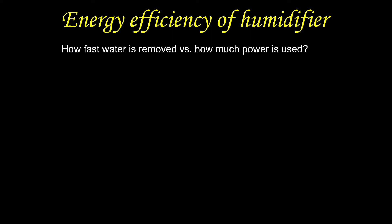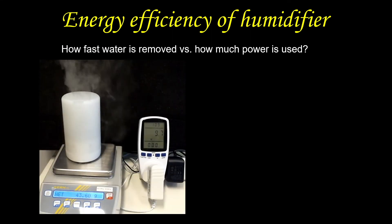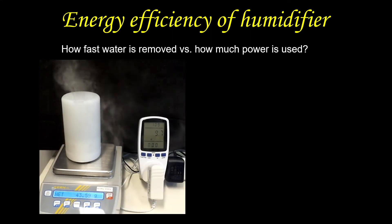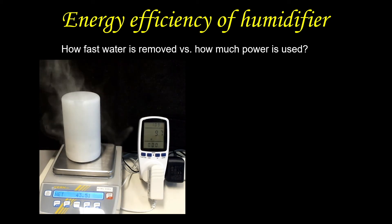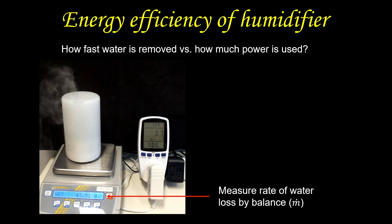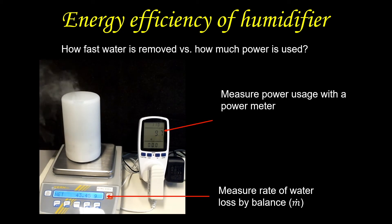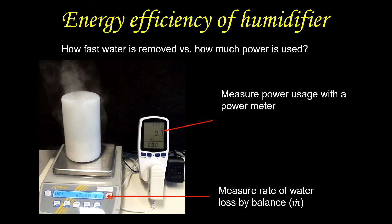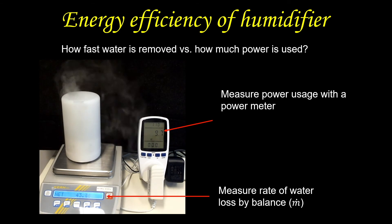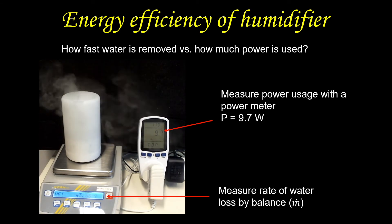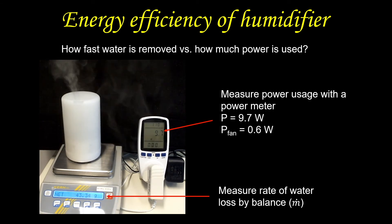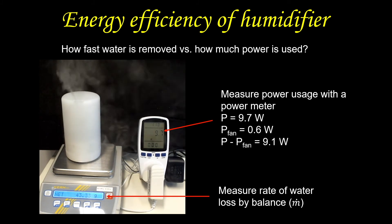So what is the energy efficiency of the humidifier? To find out, we can measure how fast the water is removed from the humidifier by putting it on a balance. We can also measure its power usage with a power meter. We see that during operation, the power of the humidifier is 9.7W. The fan runs at 0.6W, so the total power used for removing the water is 9.1W.